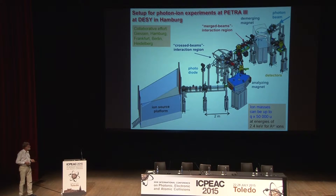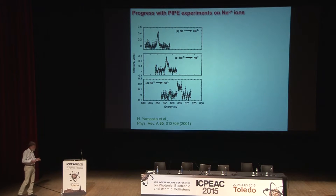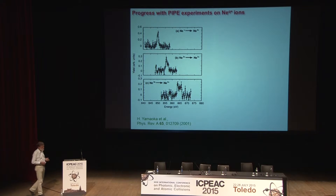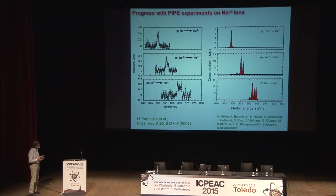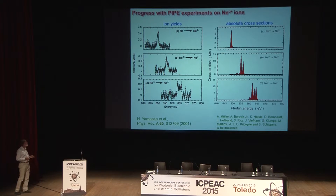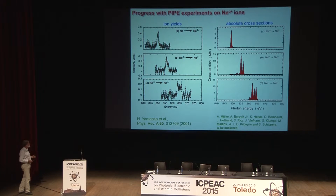The first experiment where we looked at K-shell excitation and ionization was with neon ions. This has been possible before — 15 years ago in Japan, people measured single ionization of neon 1+, neon 2+, and neon 3+ ions. We have repeated this experiment. These are our results, and one key difference is that the earlier work showed only ion yields, whereas we have measured absolute cross-sections in megabarns.